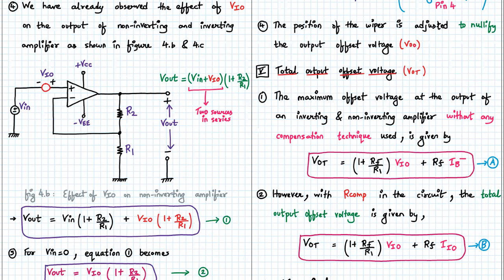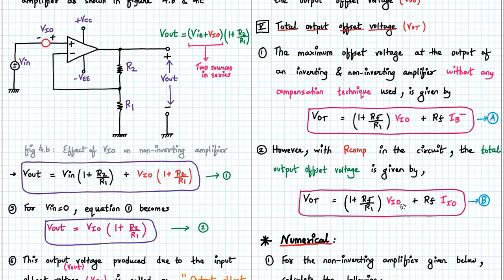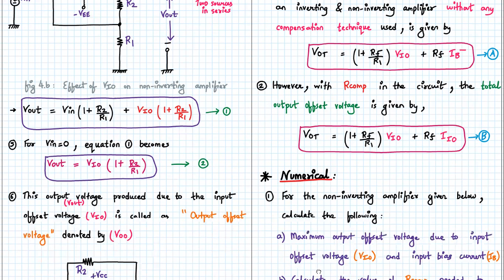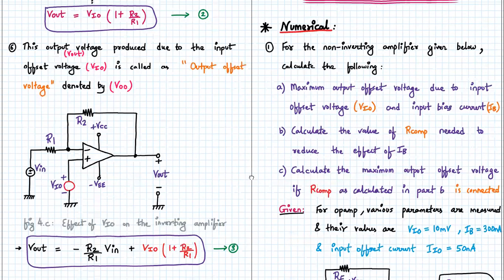Next point is that if you connect RCOM in the circuit, so basically your bias currents will get compensated, but still you have input offset current. So the total output offset voltage is given by VOT equal to 1 plus RF upon R1 into VIO. This will not change. This will change from IB minus or IB plus to IIO. So this term will become RF into IIO. This is our equation number B. So it's very, very vital when we solve numerical on this.